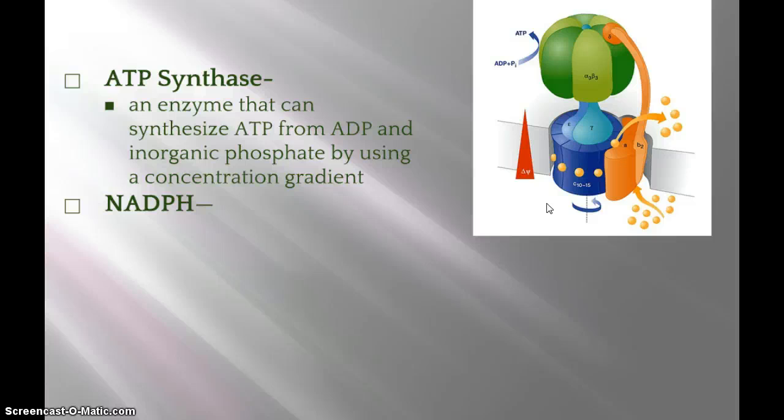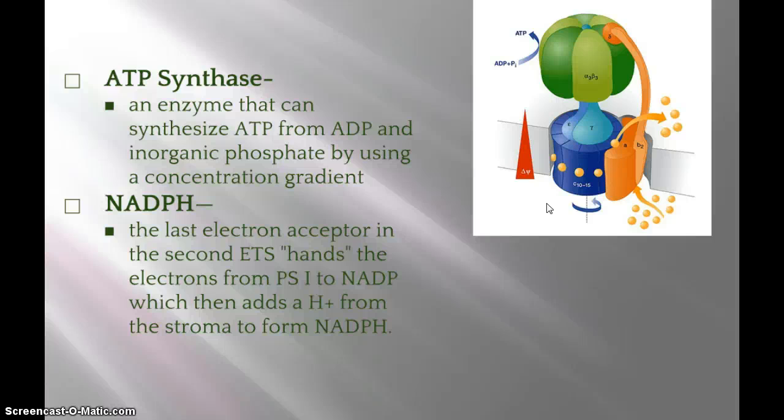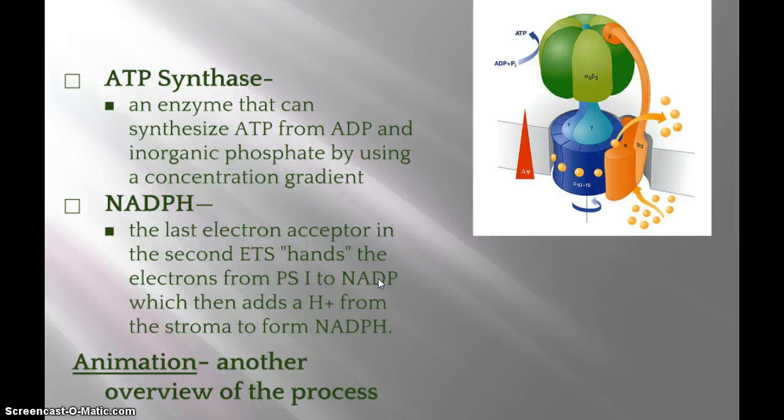NADPH is the last electron acceptor in the second electron transport system. The electron transport chain hands the electrons from photosystem I to a molecule called NADP+, which then adds hydrogen ions from the stroma to form NADPH.